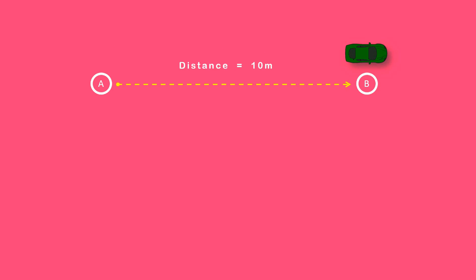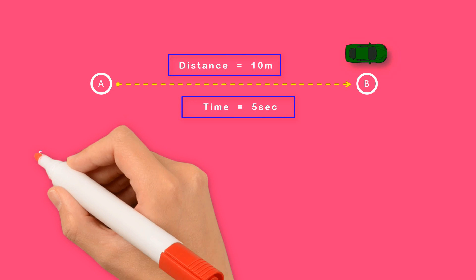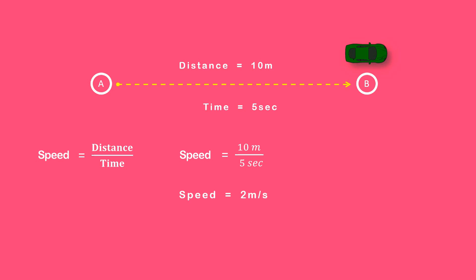Let a body move from point A to point B. It covered a total distance of 10 meters in 5 seconds. Now to calculate the speed of a body, we divide distance by time. Speed is equal to distance divided by time. Distance is 10 meters and time is 5 seconds, so 10 divided by 5 gives us 2 meters per second. Now 2 meters per second is the speed of the body between point A and point B.